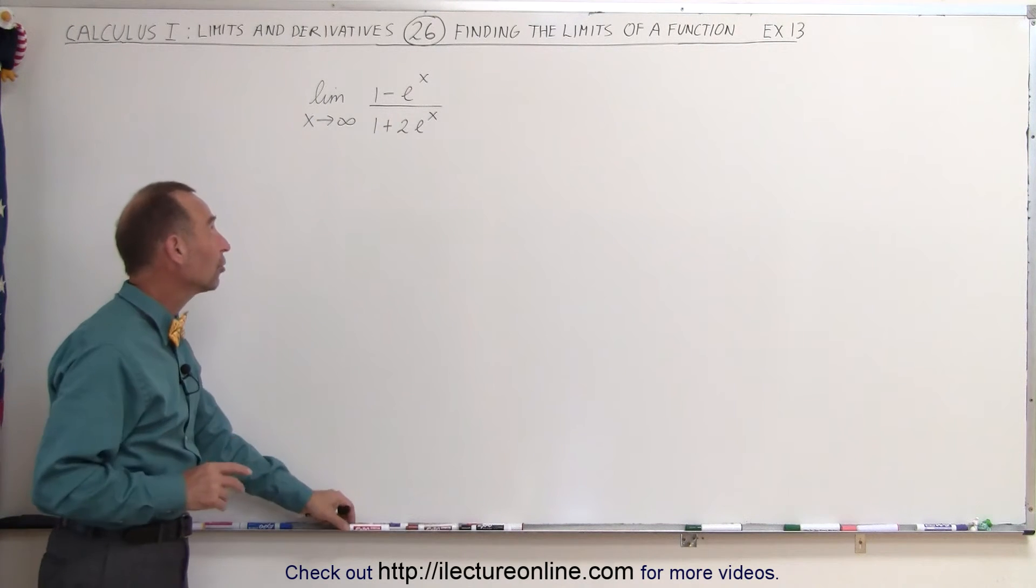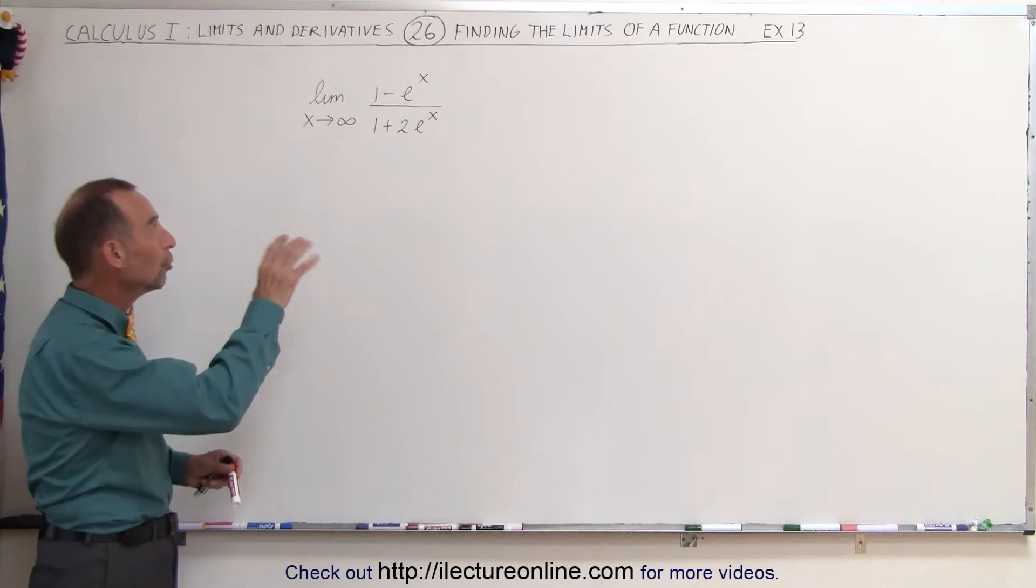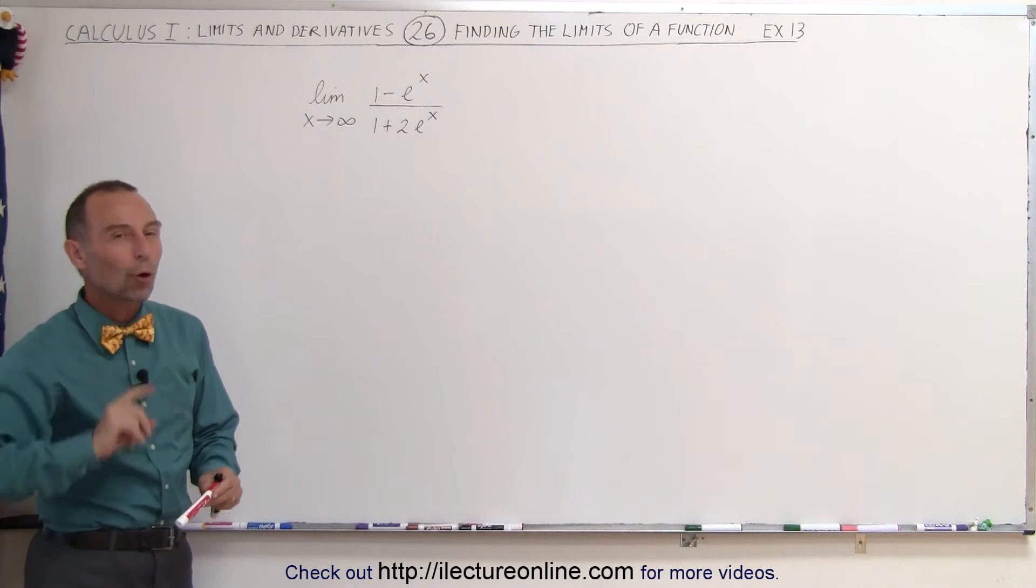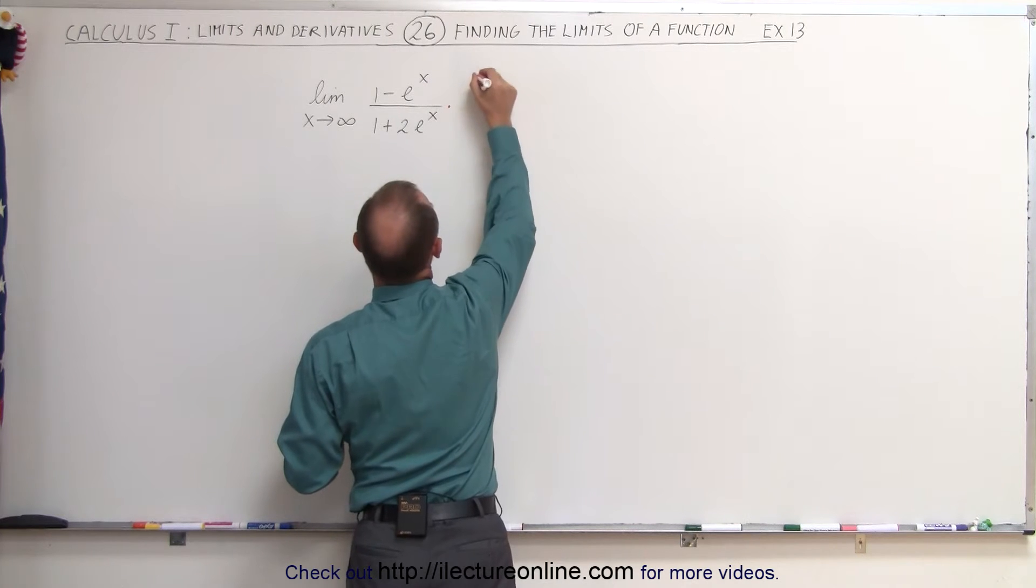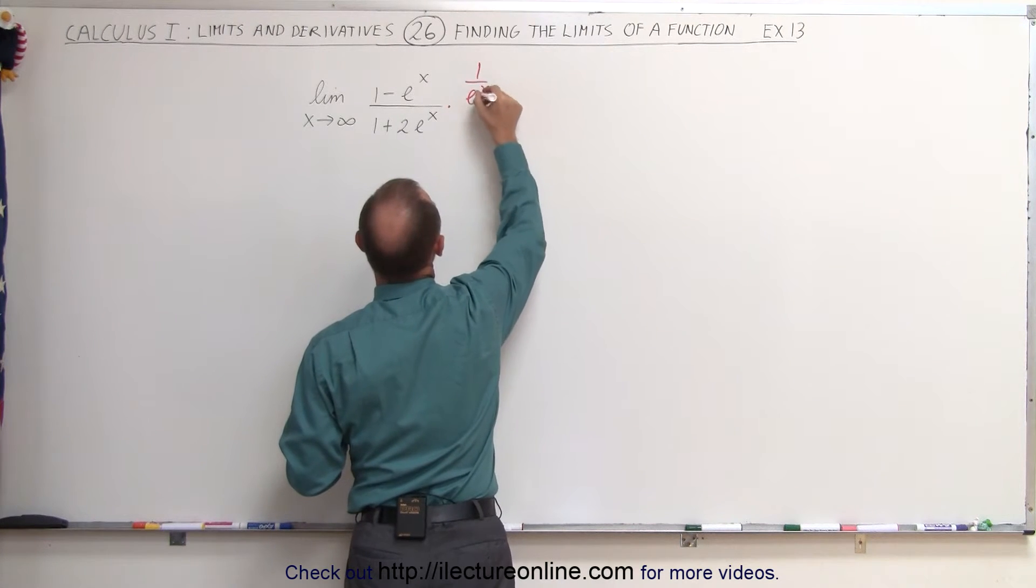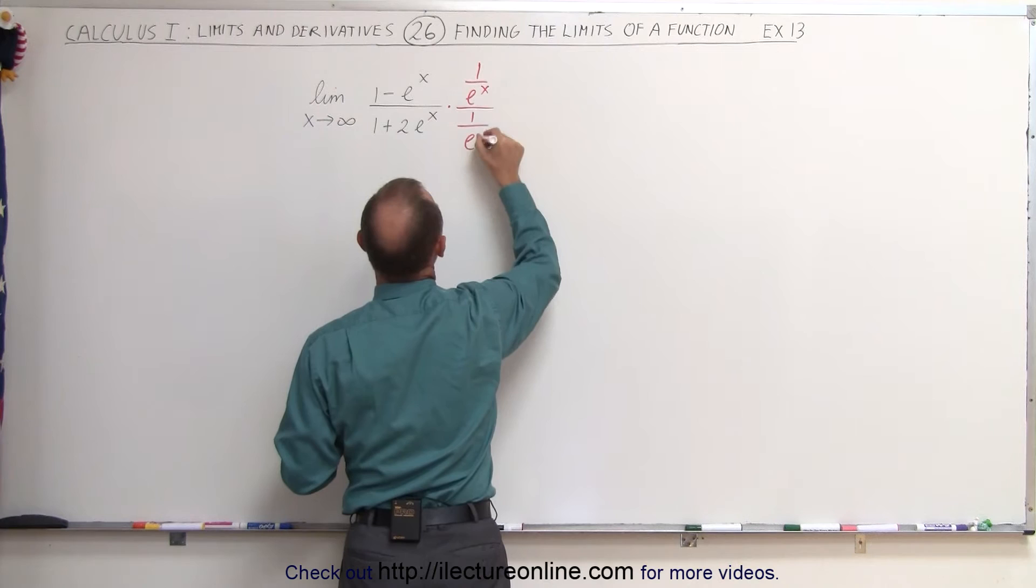So we have to come up with a trick again. The trick here is to multiply both the numerator and the denominator by 1 over e to the x. So this can be written as times 1 over e to the x divided by 1 over e to the x.